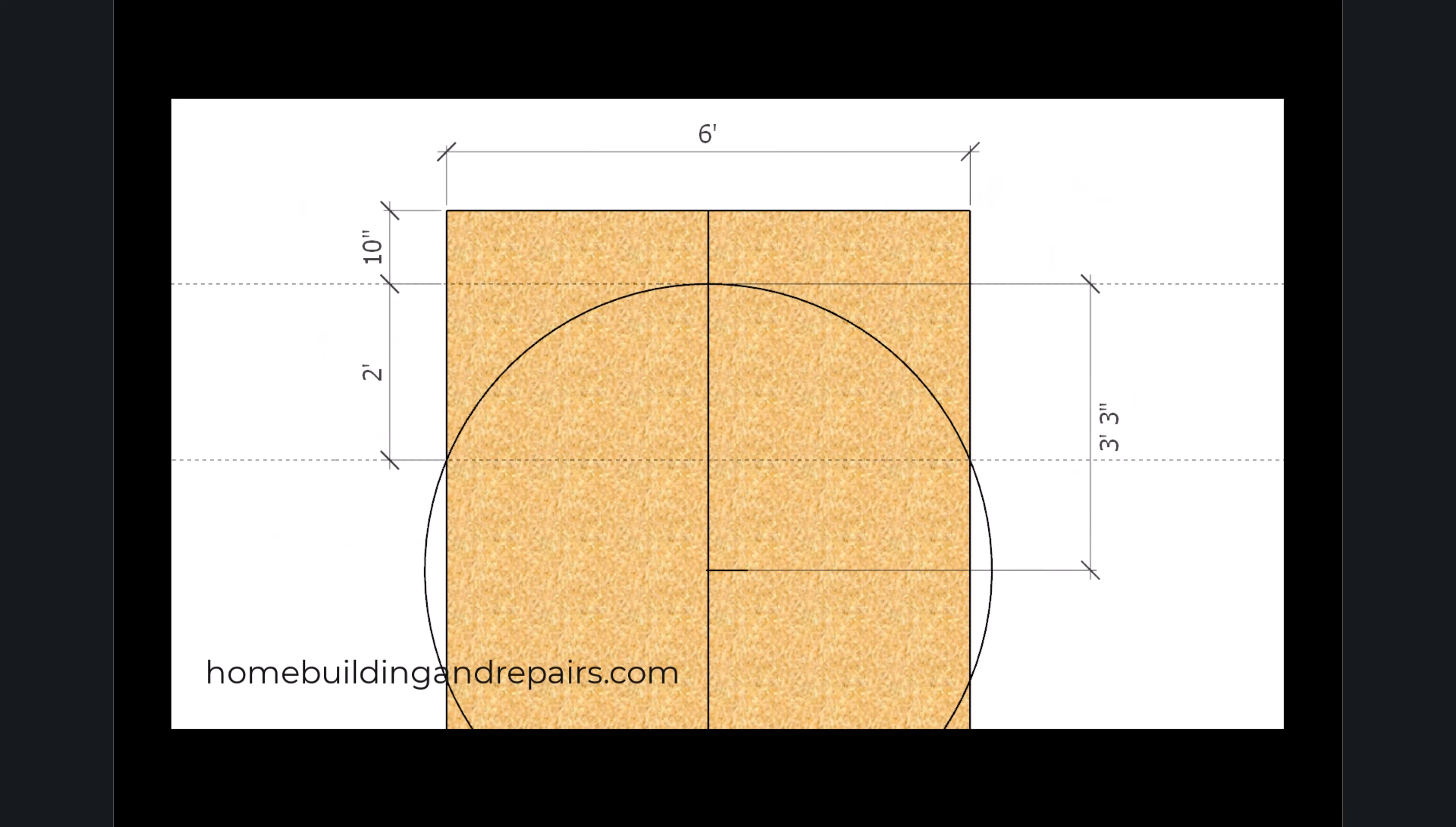And now that we have our radius, we're going to go down the center. And in our example, that would be three feet from each side. And then draw a line right down the middle. And then measure down three feet, three inches to our center point. And then we can use that center point to draw the radius for our curved arch.